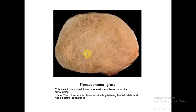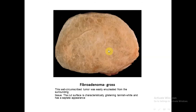This is the most common benign tumor of the breast and as mentioned, it is estrogen-dependent. Here we have the typical gross appearance of fibroadenoma. It is well circumscribed and easily resectable, easily removed from the surrounding tissue. The color is gray to tan and it has a characteristic semi-septate appearance with presence of fibrous septa in the gross appearance.